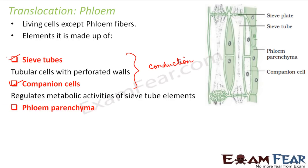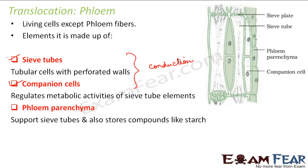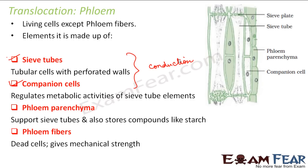Other than this, they also have phloem parenchyma, which is mainly used to support the sieve tubes and also store food. For example, xylem parenchyma was also mainly used for storage. Similarly, this phloem parenchyma is also used primarily for storage. Then we have phloem fibers, which are dead cells used only to give mechanical strength to the plants.